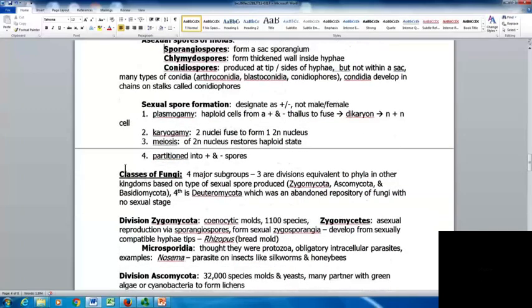With sexual spore formation, we designate them as positive and minus, not male and female. With plasmogamy, haploid cells form a positive and negative thallus that fuse to form a dikaryon, an N plus N cell. In karyogamy, two nuclei fuse to form one 2N nucleus. Then during meiosis, the 2N nucleus is restored to the haploid state and partitioned into positive and negative spores.